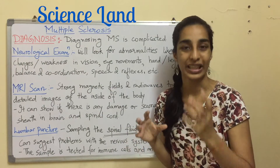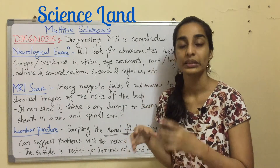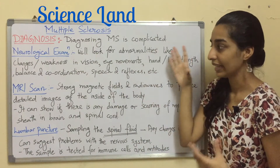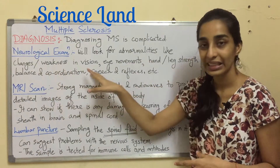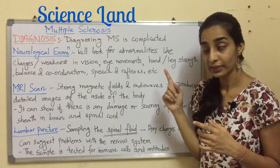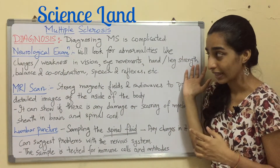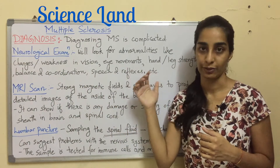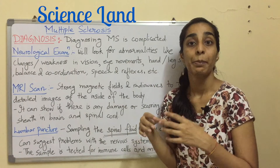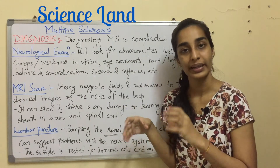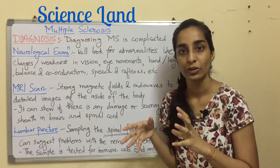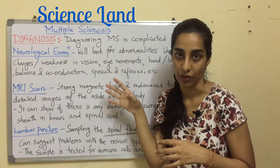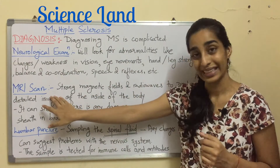The first is the neurological examination. A neurologist will look for certain changes or abnormalities in a patient, such as changes or weakness in vision, eye movements, hand and leg strength, balance and coordination, speech, and reflexes. These factors may indicate damage to the nerves, which can point toward multiple sclerosis.